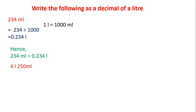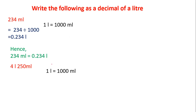Let's take the next problem: 4 liter 250 milliliter. Here, there are two units — one is liter, another one is milliliter. The liter part is already in liters, so no conversion is needed. We have to convert this 250 milliliter as a liter. Since 1 liter is equal to 1000 milliliter, we are converting lower unit to higher unit, so we have to divide by 1000.